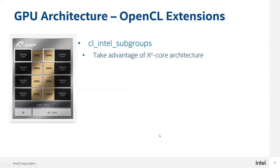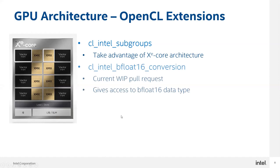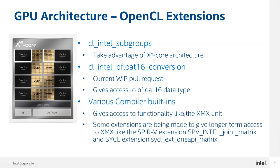For the OpenCL version, we required a number of features. We use subgroups to take advantage of the core's architecture. Because we need to support bfloat16 data types, we use some extensions related to that. We use various compiler built-ins that give us access to the XMX unit, along with other items available on Intel hardware. There are some plans to enable simpler access to this — I believe there are extensions being requested to add to SPIR-V and to SYCL, and there are plans to get an OpenCL extension, similar to what we have for bfloat16.